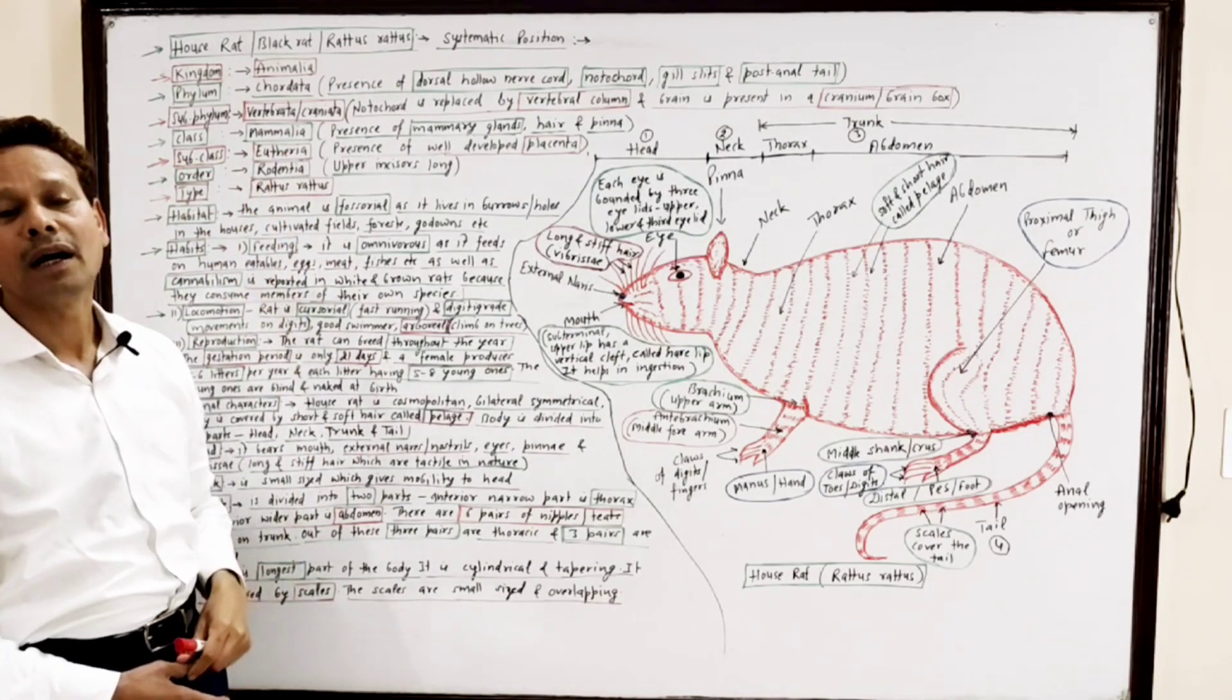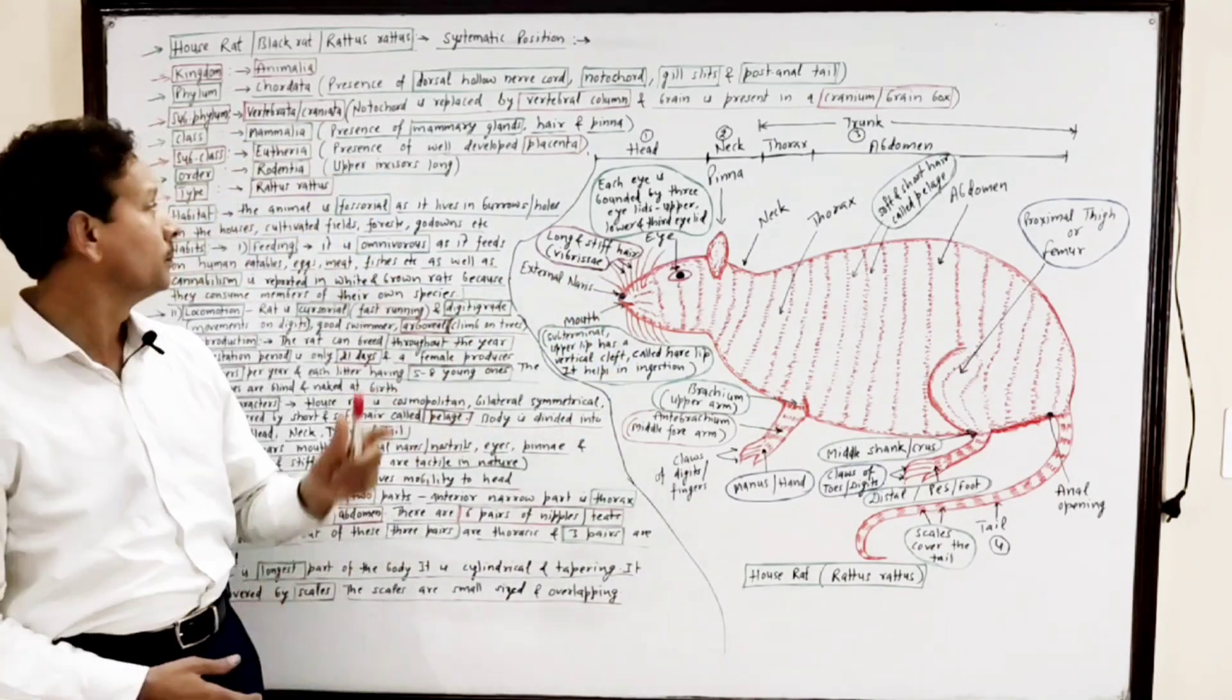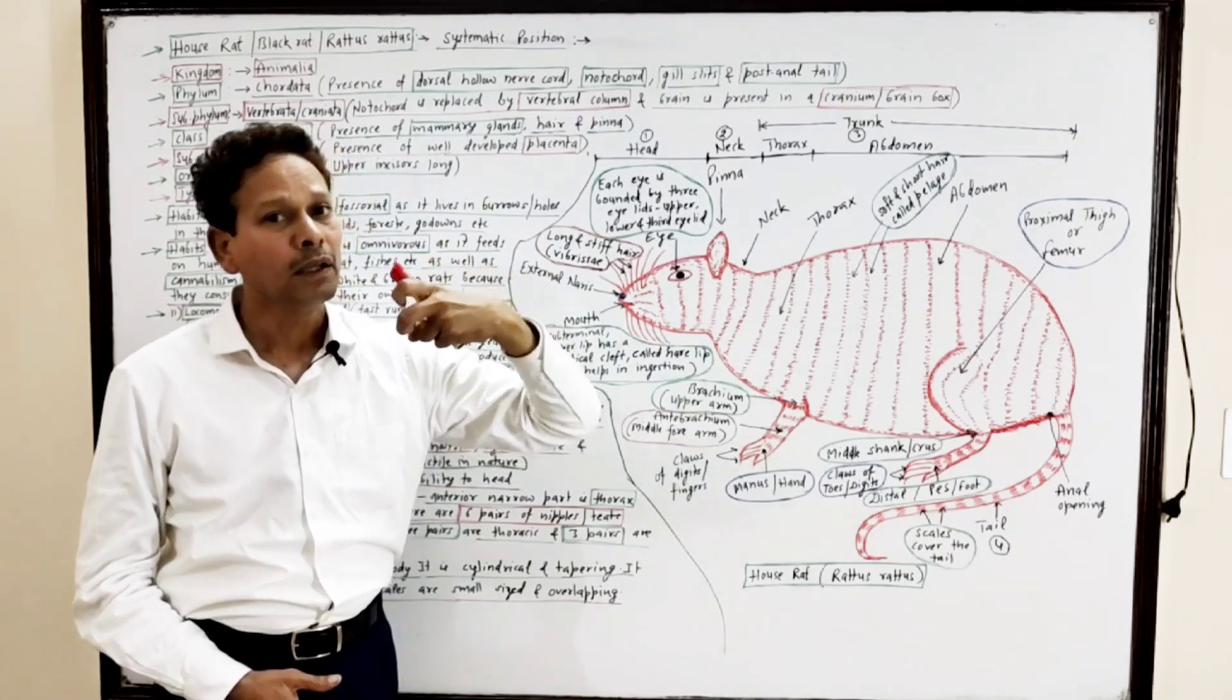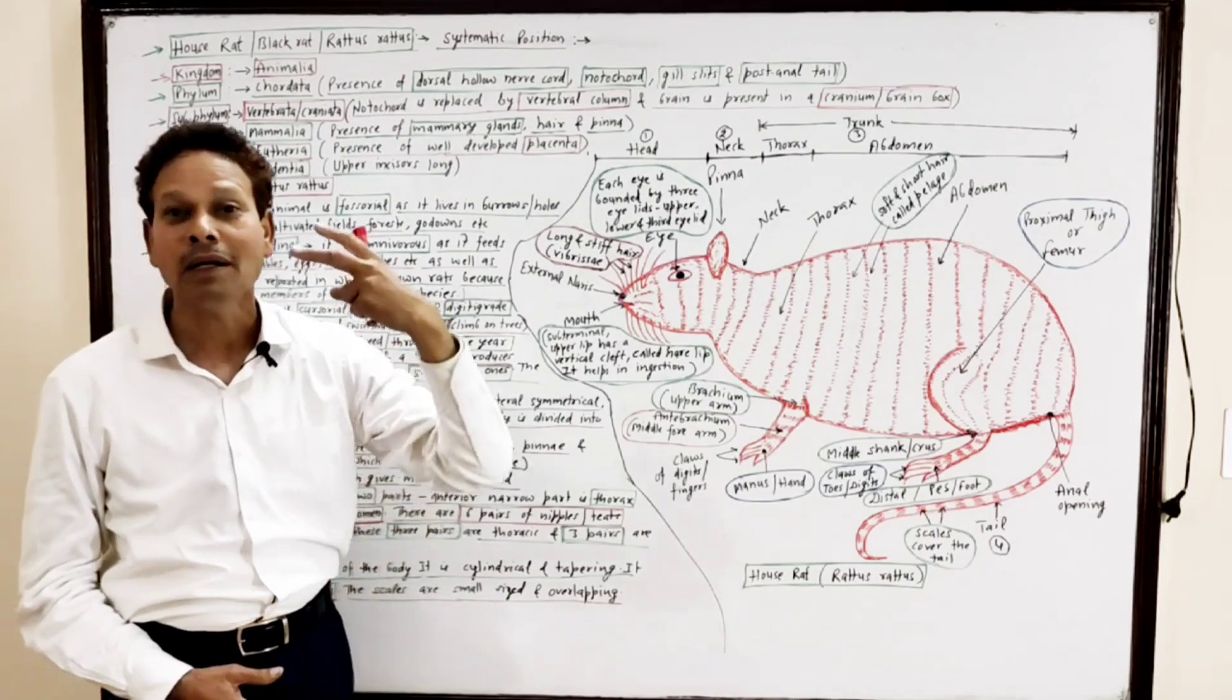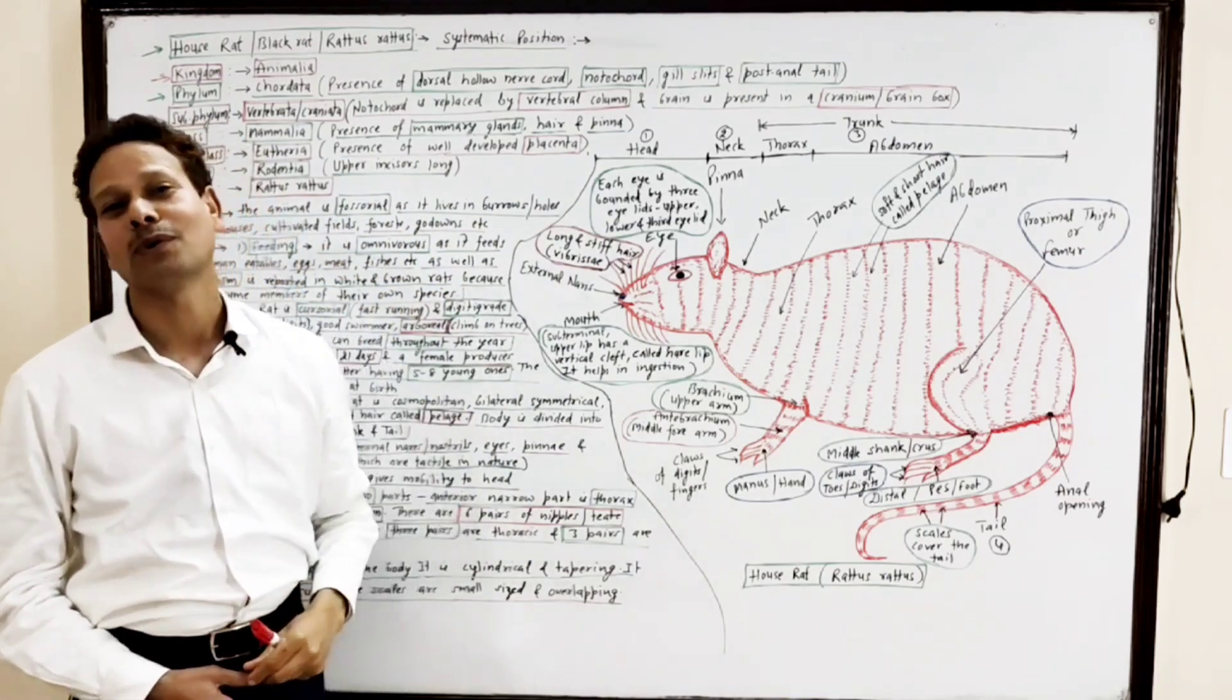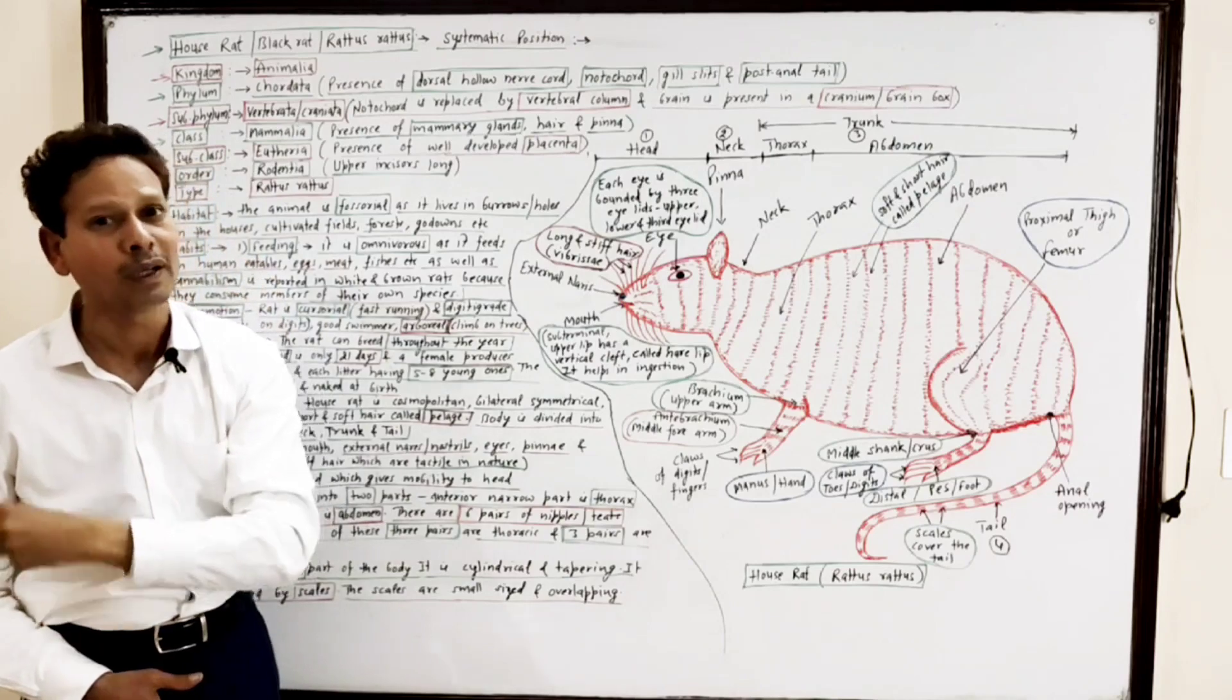Subclass Eutheria means there is a well-developed placenta. Order Rodentia means in the buccal cavity, both jaws possess teeth, but the incisors of upper jaw are longer as compared to incisors of lower jaw.